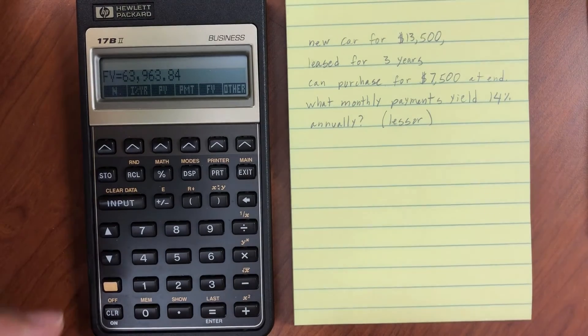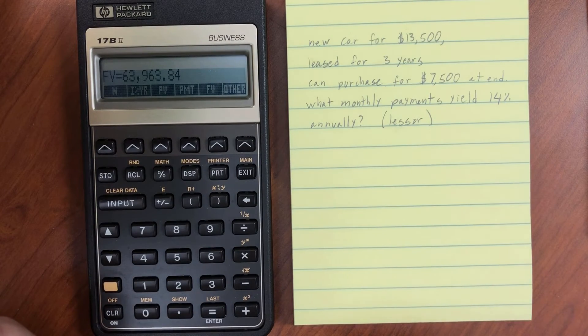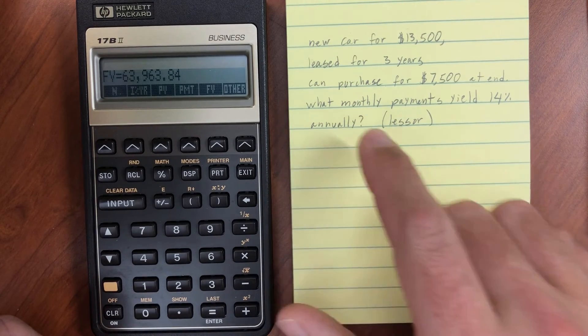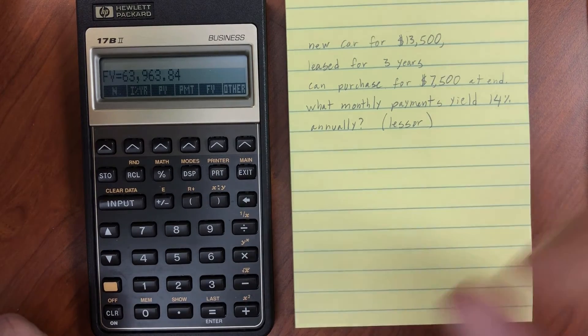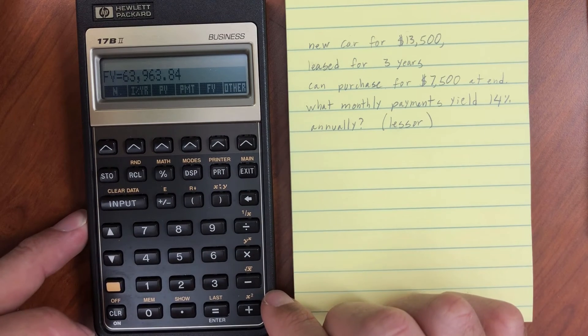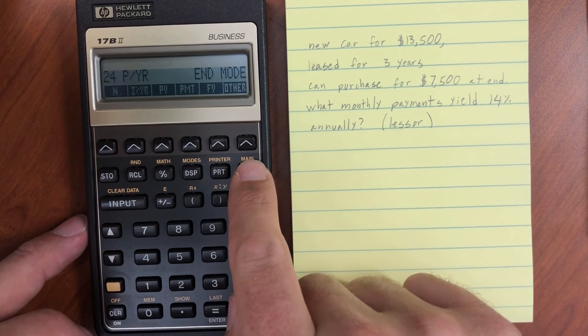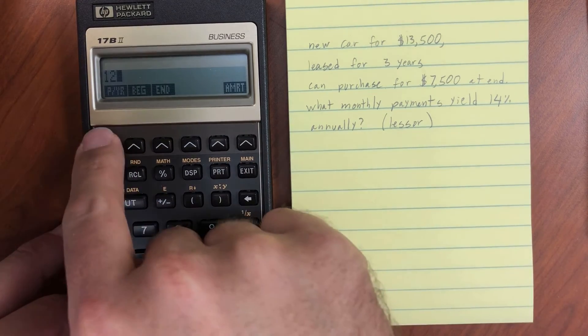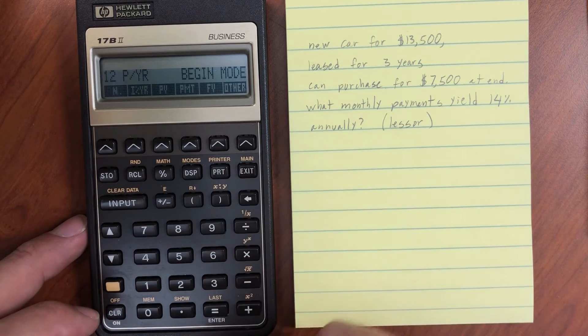All right, last example. So we have a new car that we can lease for $13,500. It's going to be leased for three years. And at the end, the lessee has the option to purchase it for $7,500. So what monthly payments will yield 14% annually for the lessor, the person who is leasing the car, letting it be leased, who owns the car initially. Let's clear our data. And let's see, monthly payments. And it's going to be 12 payments per year. And it's going to be at the beginning of each month is what the payments are. So we'll do it at the beginning.